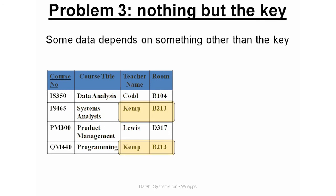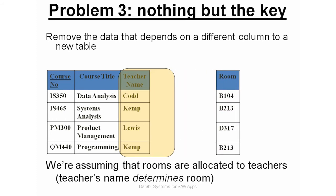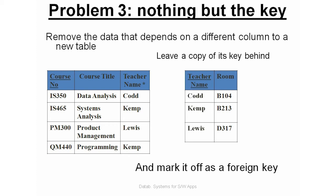Some data now depends on something other than the key. Remember the rule from the second to the third normal form: we need to check if non-key attributes depend on another non-key attribute. If they do, we move them to a separate table. For example, if I know the teacher name, I can find the room number. So I generate another table with teacher name as the primary key. Notice that teacher name then becomes a foreign key in the table it left behind.